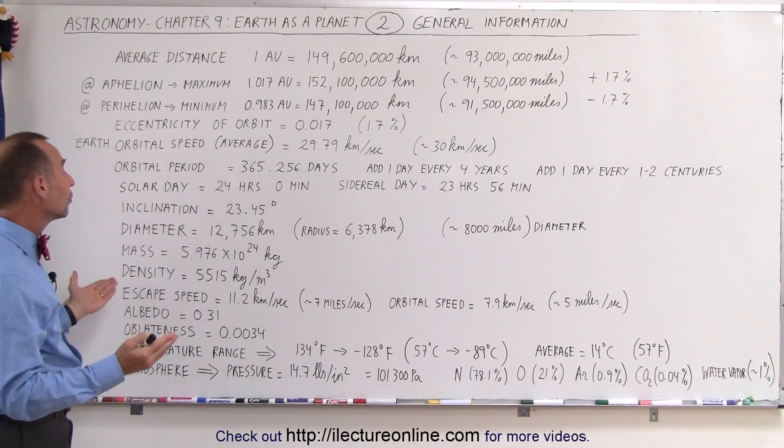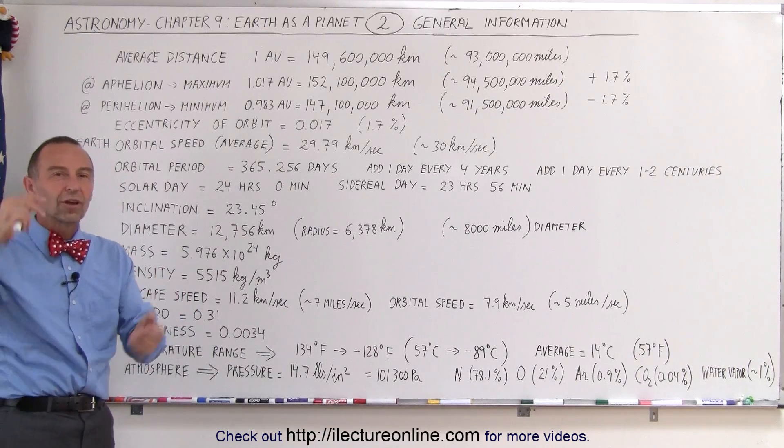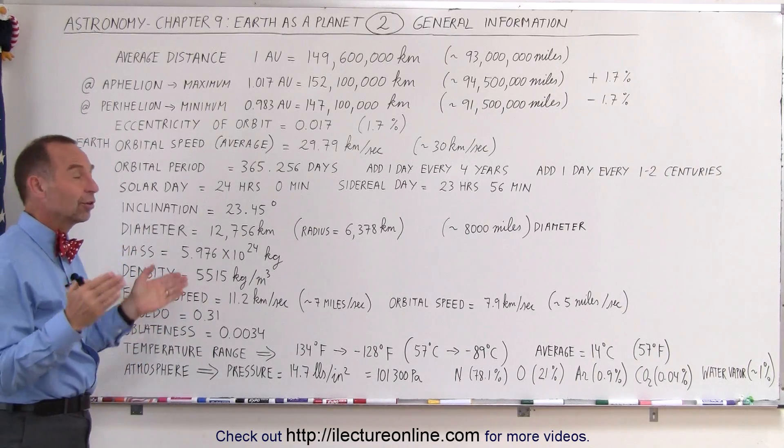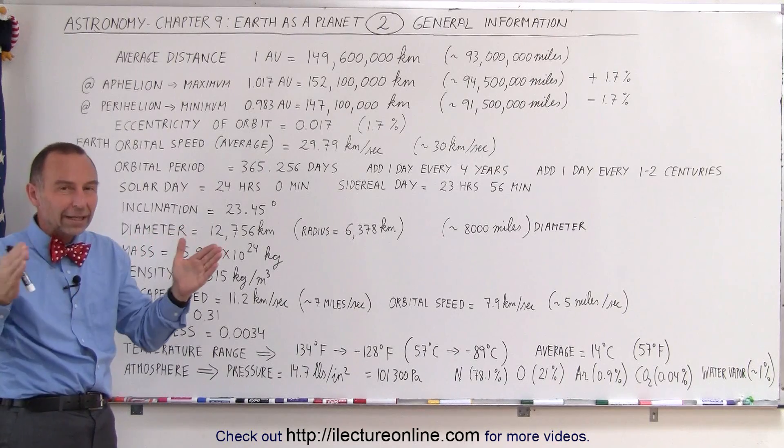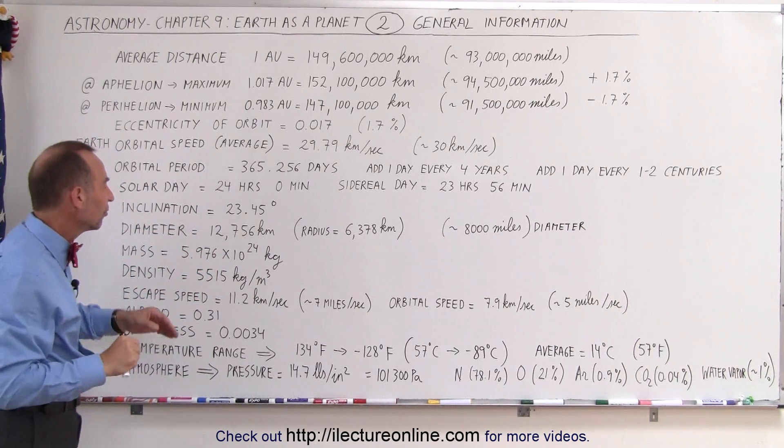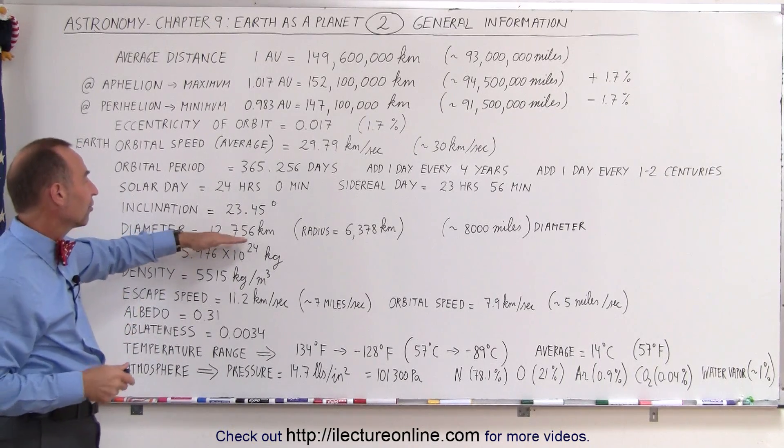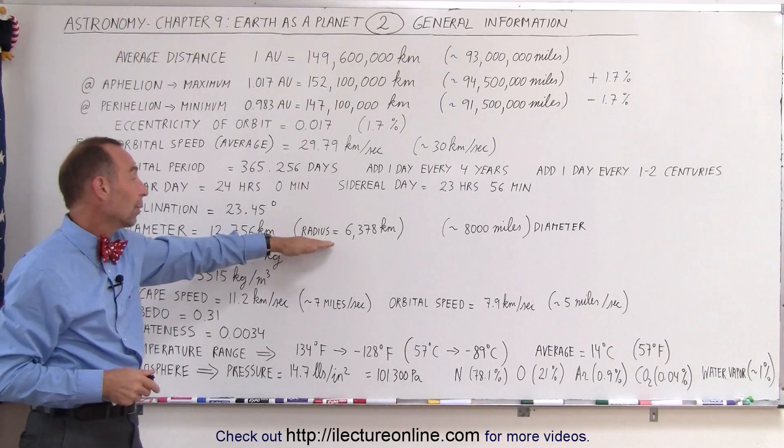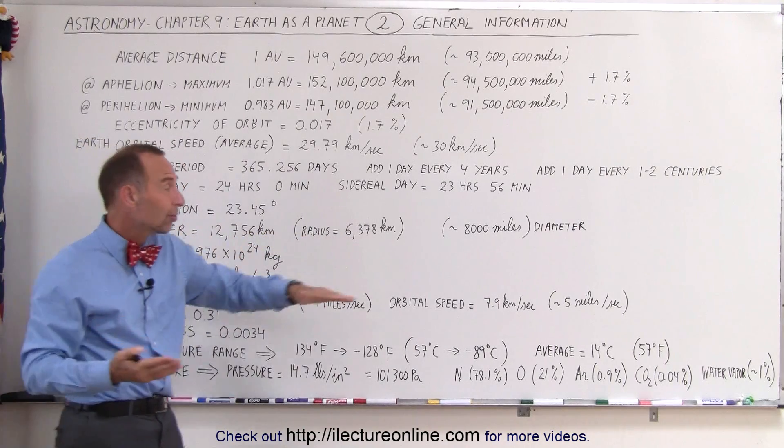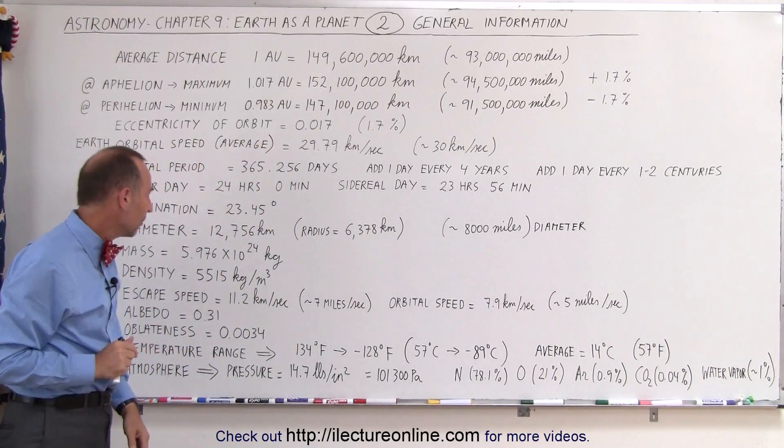The diameter of the Earth is 12,756 kilometers, but that depends upon which portion of the Earth you want to measure. It turns out that the Earth is a little bit wider on the equator than it is tall from pole to pole. There's a little bit of a difference there, but the average diameter of the Earth is 12,756 kilometers, therefore, the radius is half of that. In miles, we usually say it's about 8,000 miles. Actually, it's slightly less than 8,000 miles in diameter.